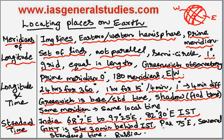For Pakistan, the standard time is taken as 75 degrees East. There are countries which have a large East-West area, so they need to adopt several standard times. One such example is Russia, which is very large and has adopted 12 standard times.